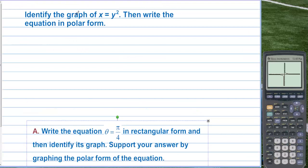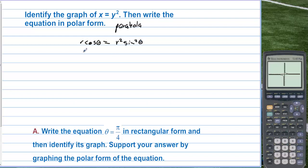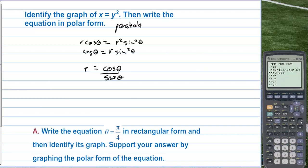Identify the graph of x = y², then write the equation in polar form. This is a parabola. Substituting x = r cosθ and y = r sinθ, we have r cosθ = r² sin²θ. Dividing both sides by r and then by sin²θ, we get r = cosθ over sin²θ. Graphing this on the calculator gives that parabola shooting off to the right.